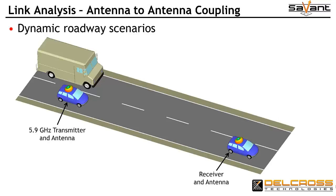Now, instead of looking at far-field radiation pattern performance, we'll consider a link analysis. Savant can compute the antenna-to-antenna coupling from the input of our transmit antenna to the output of our receive antenna — a metric of great interest to communication systems engineers. We'll consider two dynamic scenarios and use Savant to simulate and animate the transmitter-to-receiver link coupling as the delivery van moves through the environment.